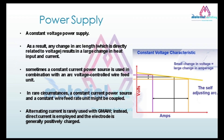GMAW uses a constant voltage power supply, and direct current electrode positive (DCEP) polarity is used most often. Any change in arc length, which is directly related to voltage, results in a large change in heat input and current. Sometimes a constant current power source is used in combination with an arc-voltage-controlled wire feed unit. Alternating current is rarely used with GMAW; instead, direct current with a positively charged electrode is standard. AC is used in tandem MIG and aluminum MIG welding.